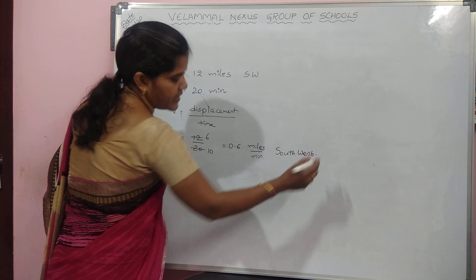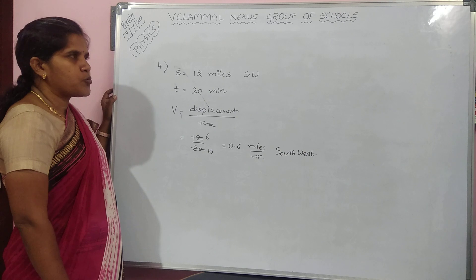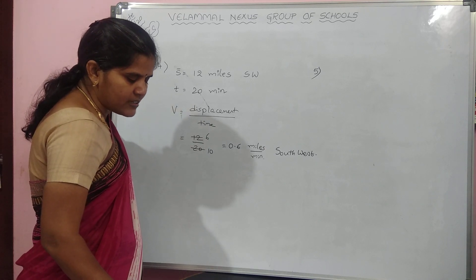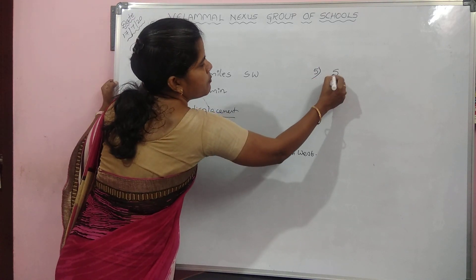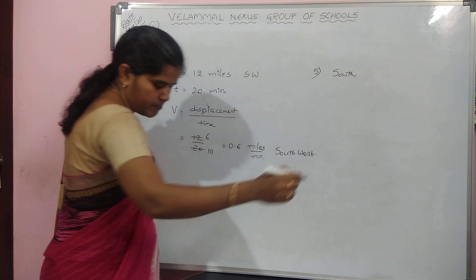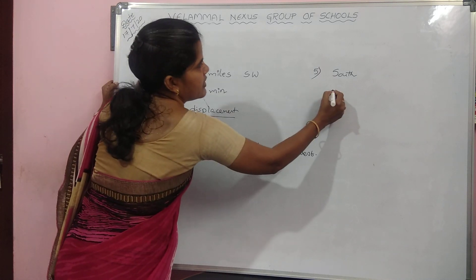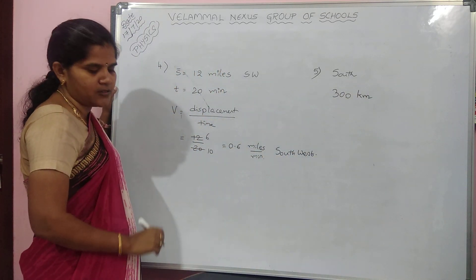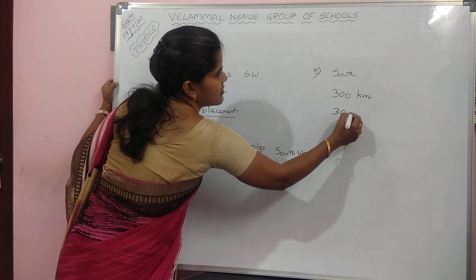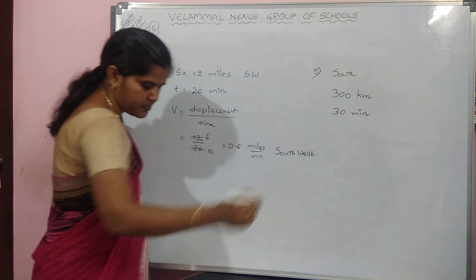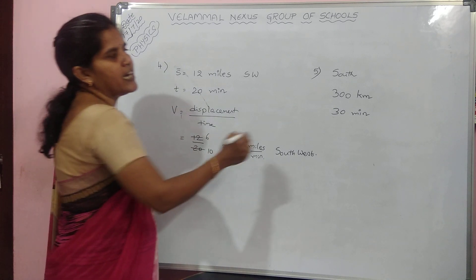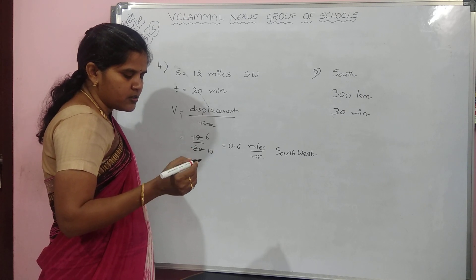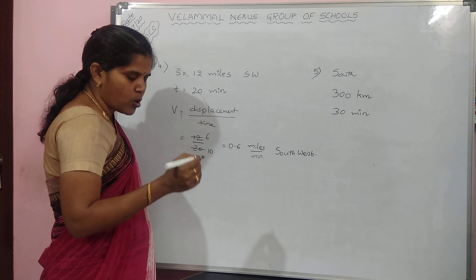Take the next problem. An aeroplane flies towards south and covers 300 kilometers in 30 minutes. What is the velocity of the aeroplane? Displacement is 300 kilometers and time taken is 30 minutes.